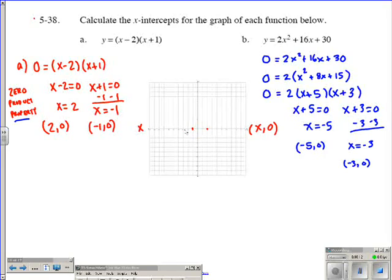So one of them being 1, 2, 3, 4, 5, right about here. The other one being 1, 2, 3, about right there.